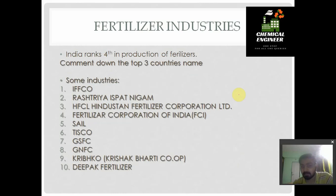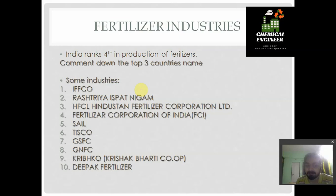India ranks fourth in the production of fertilizer. At the end of this video, please comment the top three countries in fertilizer production. The major fertilizer companies in India include: IFFCO (Indian Farmers Fertilizer Cooperative Limited), Rashtriya Ispat Nigam, HFCL (Hindustan Fertilizer Corporation Limited), Fertilizer Corporation of India (FCI), SAIL (Steel Authority of India Limited), TISCO (Tata Iron and Steel Company), GSFC (Gujarat State Fertilizer Cooperative), and GNFC (Gujarat Narmada Valley Fertilizer Cooperative), along with Kripco and Deepak Fertilizers.